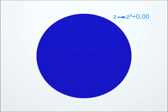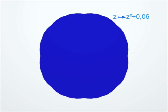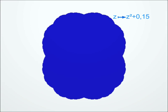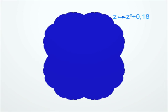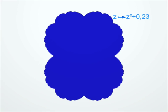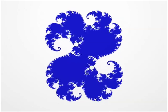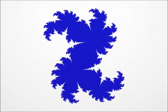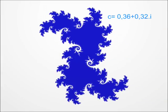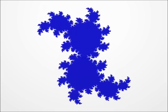But we can play the same game with other transformations, like those of the form Z squared plus C, where C is a complex number that we can choose at will. For each complex number C, we therefore have a Julia set whose shape changes when C changes. You can see a few examples here.